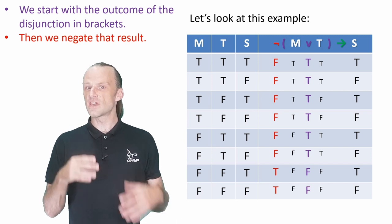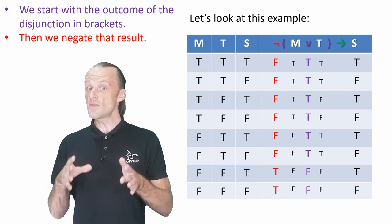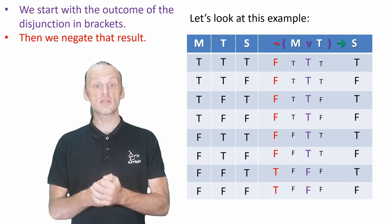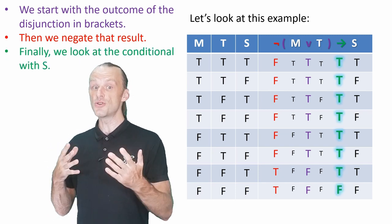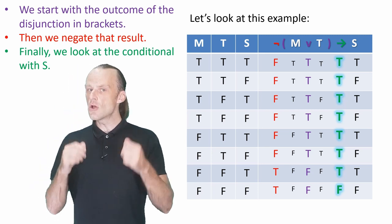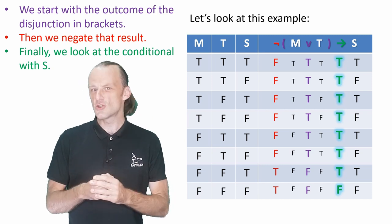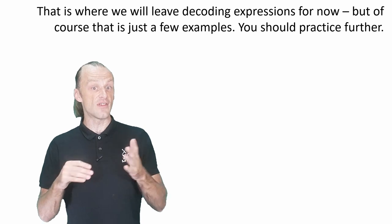Finally, we have the conditional to find the truth value of the whole statement. Because of the way that the conditional table works, almost all the outputs come back as true, meaning we don't know it's false. This statement is only false on the very last line, so it is not a tautology. We'll leave decoding expressions there for now.